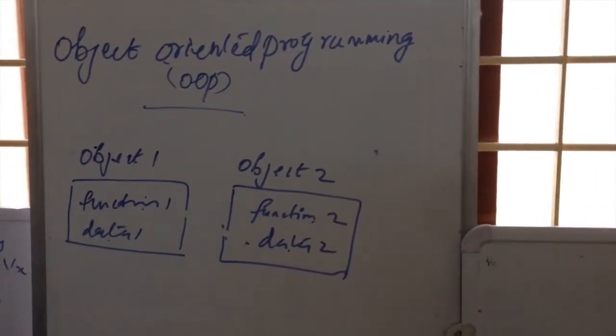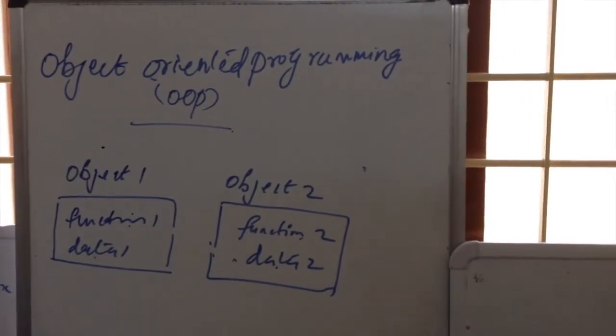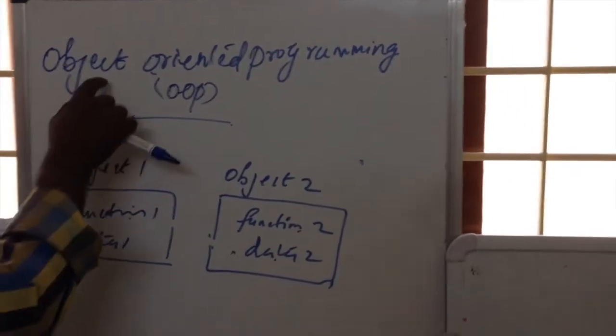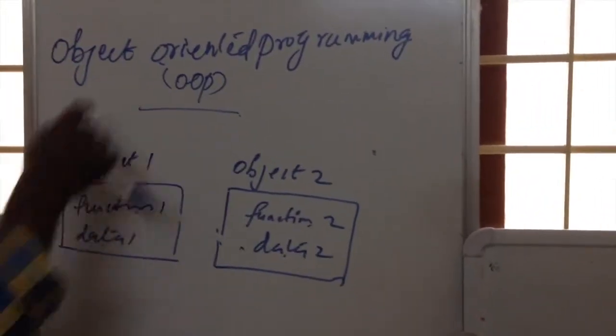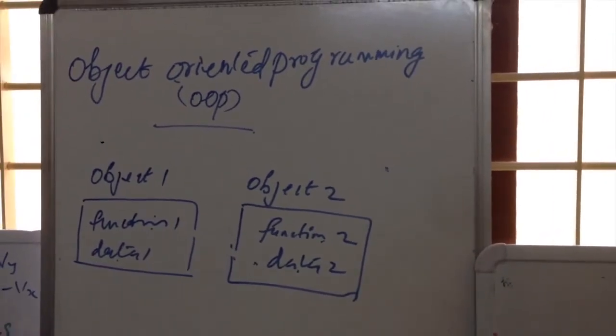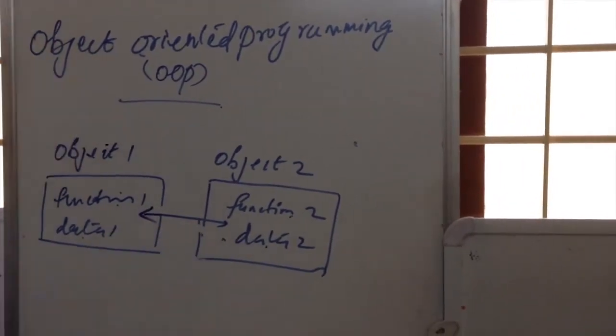So we are able to hide the data within. One of the most important advantages of OOP is it models the real world. We can communicate with each other.